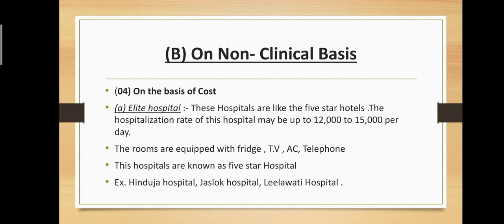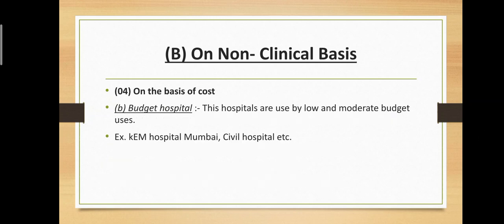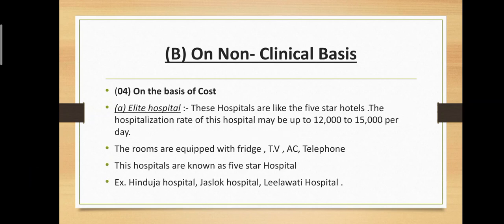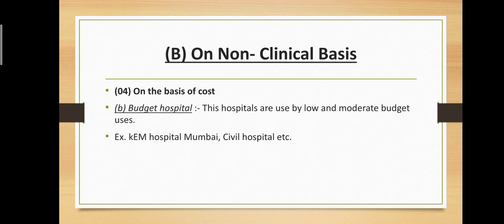The fourth subtype is on the basis of cost, divided into two types: first, elite hospital — these hospitals are like five-star hotels; the hospitalization rate may be up to 12,000 to 15,000 per day; rooms are equipped with fridge, TV, AC, telephone, etc. Examples: Hinduja Hospital, Jaslok Hospital, Lilavati Hospital, Mumbai. Second, budget hospital — used by low and moderate budget patients; example: KEM Hospital Mumbai, Civil Hospital, etc.